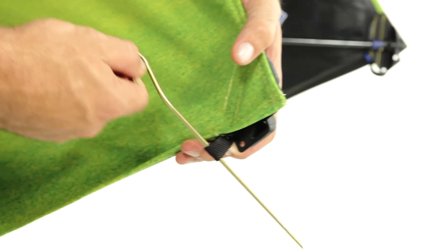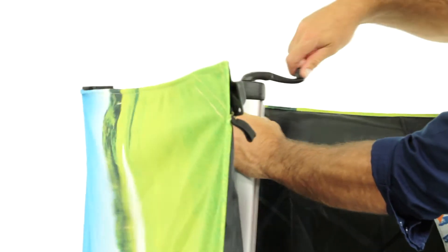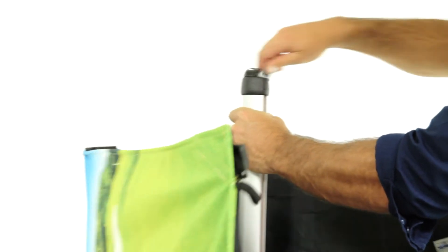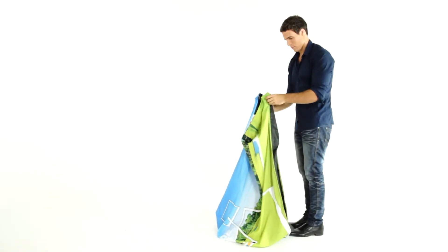To retract the banner, turn the handle in an anti-clockwise direction and allow the bottom legs to fully retract. Gently pull the legs together.